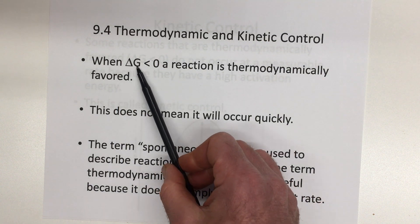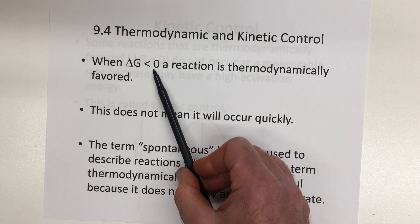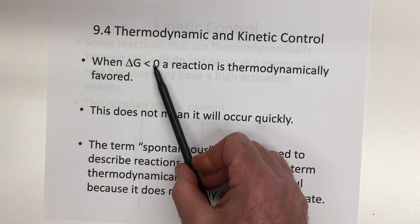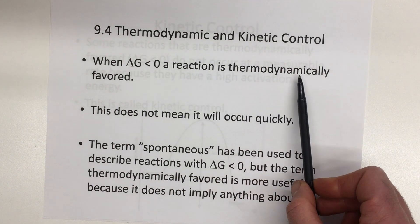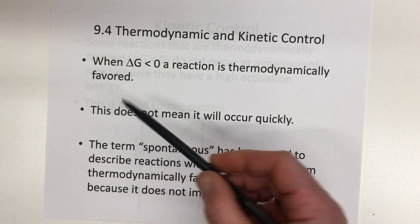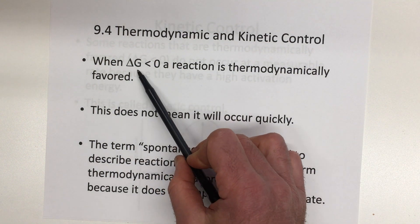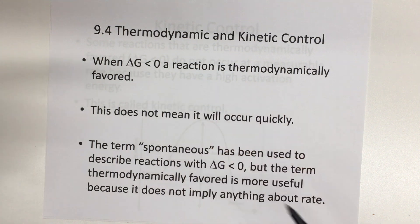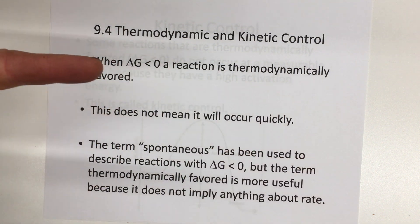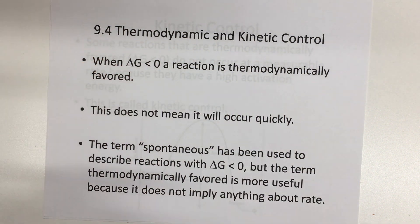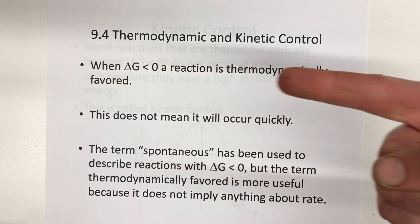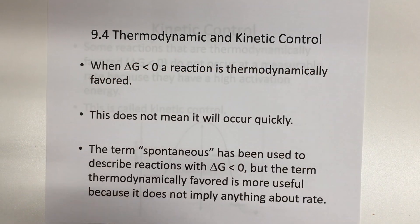We know that when delta G is negative, less than zero, a reaction is thermodynamically favored in the forward direction. It's really essential that you remember this: if delta G is negative, the reaction goes in the forward direction. The opposite is also true — if delta G is positive, greater than zero, then it goes in the reverse direction.